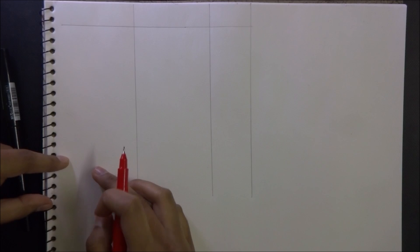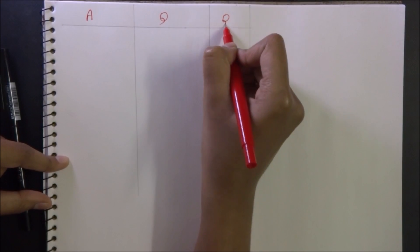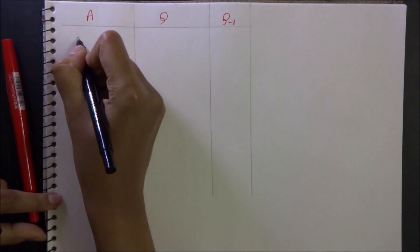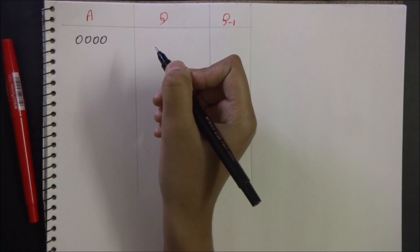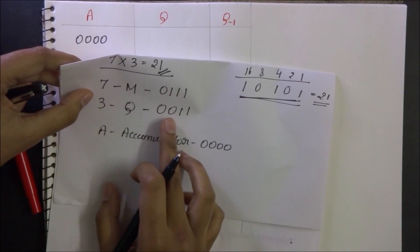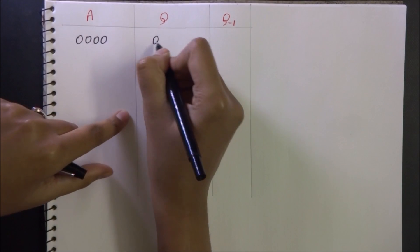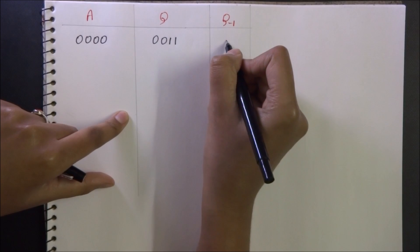We need a table having A, Q and Q-1. 0-0-0-0. Q is 3, whose value was 0-0-1-1. 0-0-1-1. Q-1 is initially 0.